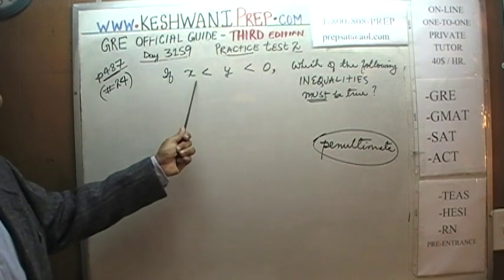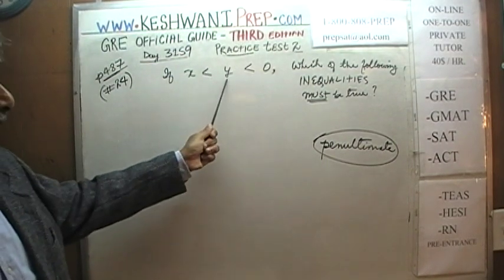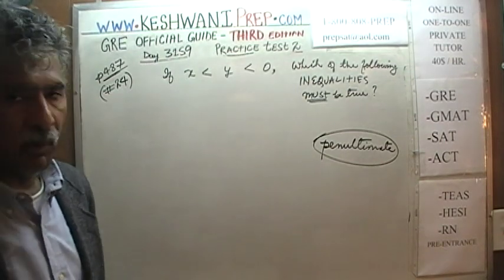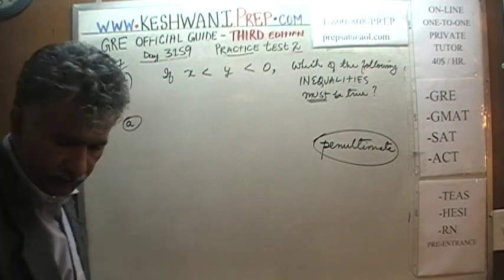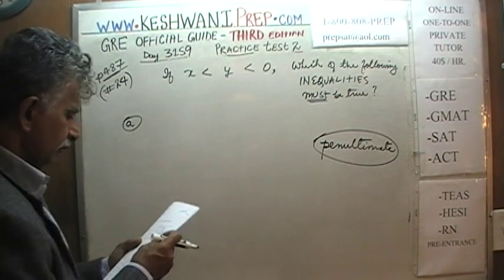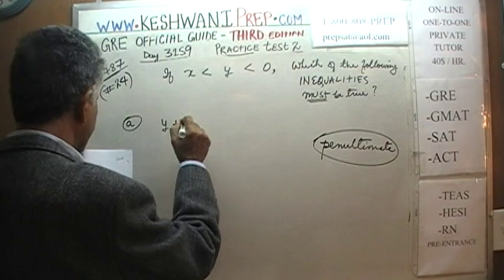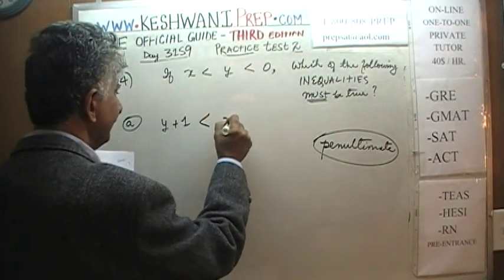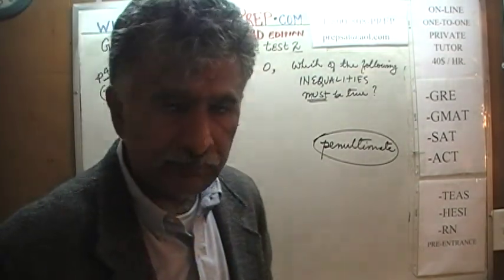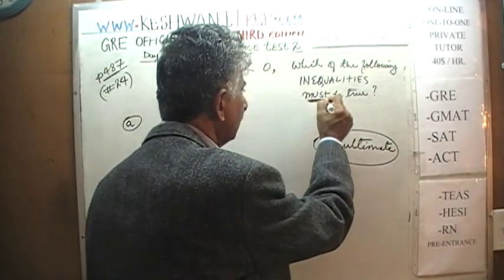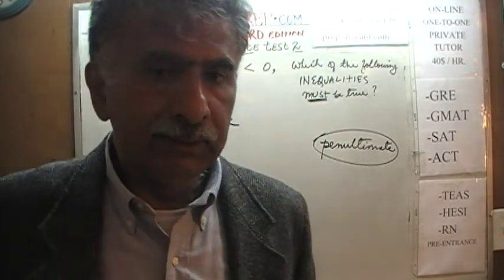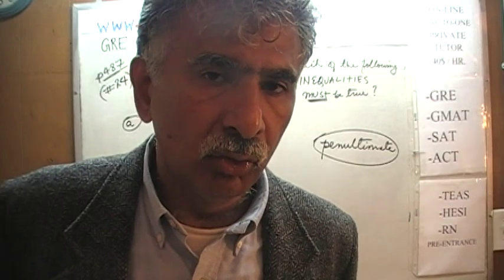The problem says: if x is less than y, and y in turn is less than 0, which of the following inequalities must be true? The key word here is 'must' — the inequality has to hold at all times, without any exception.